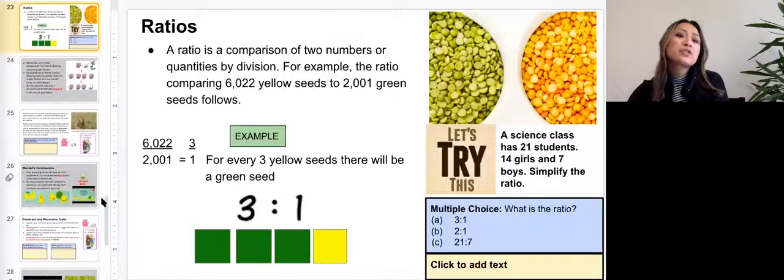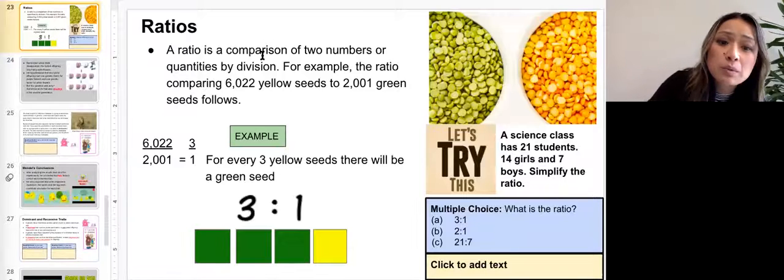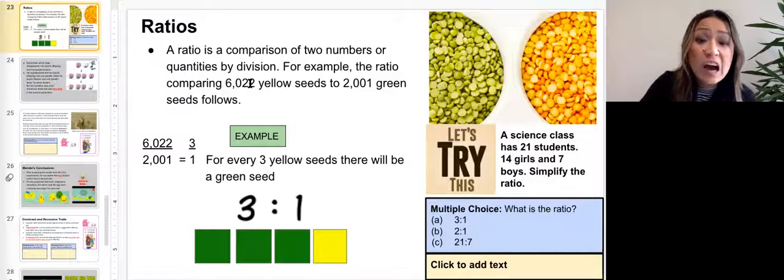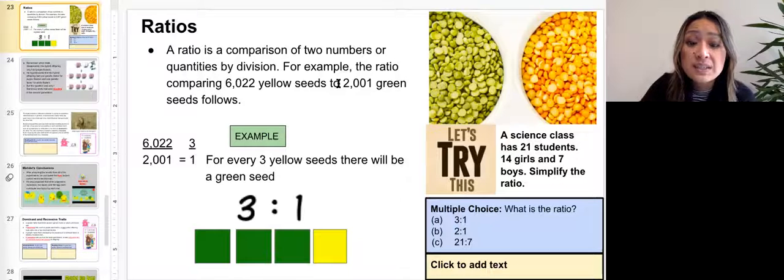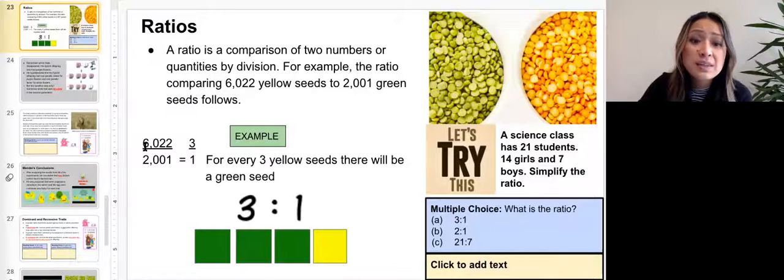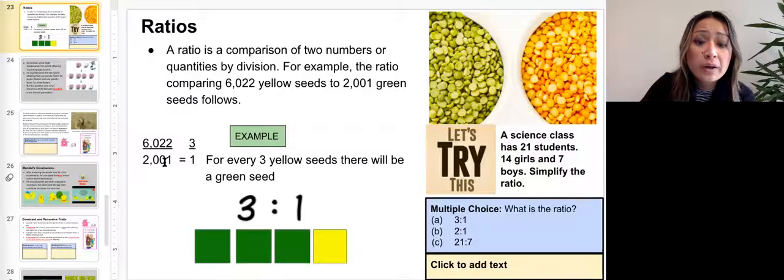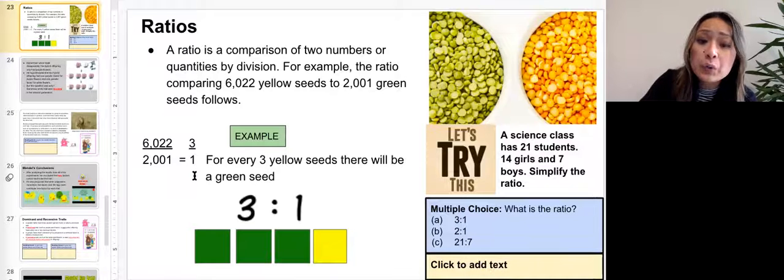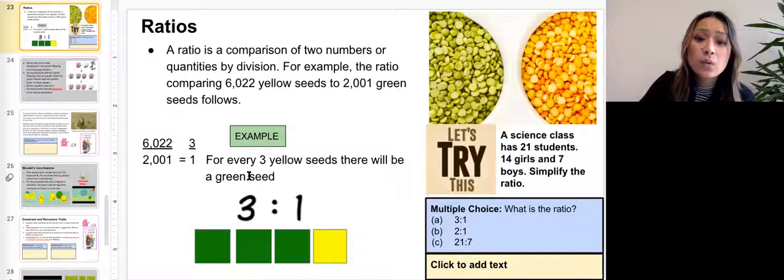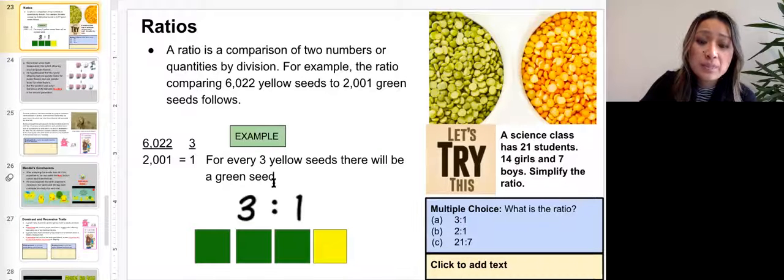And so let's go to slide 23. Ratios. A ratio is a comparison of two numbers or quantities by division. So for example, the ratio comparing 6,022 yellow seeds to 2001 green seeds follows. So it'd be 6,022 over 2001. And this is, if you simplify it, the ratio is three to one. Or in other words, for every three yellow seeds, there will be one green seed. So the ratio is three to one.